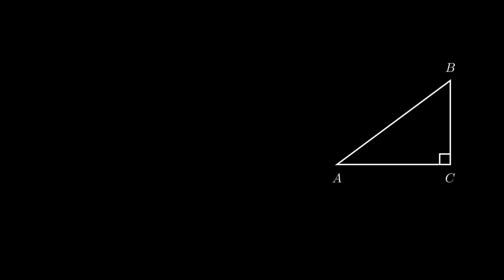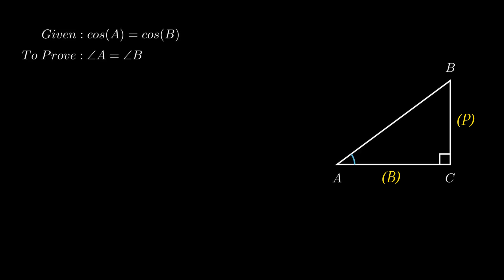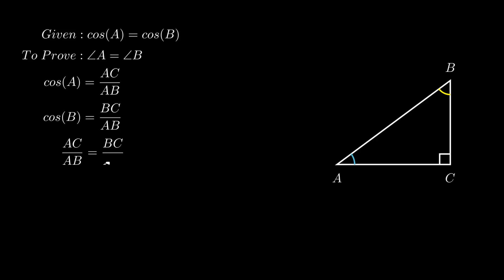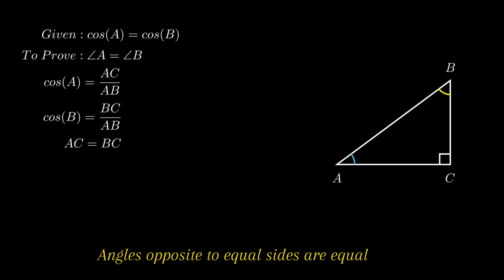If angle A and angle B are acute angles such that cosine A equals cosine B, we need to show that angle A equals angle B. Consider triangle BAC. For cosine A, AC is the base, BC is the perpendicular, and AB is the hypotenuse, so cosine A equals AC over AB. For cosine B, BC is the base, AC is the perpendicular, and AB is the hypotenuse, so cosine B equals BC over AB. Since cosine A equals cosine B, we get AC over AB equals BC over AB, which simplifies to AC equals BC. Since angles opposite to equal sides are equal, therefore angle A equals angle B.